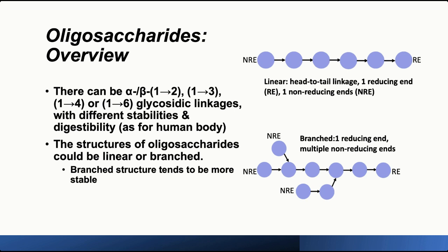Next we're going to cover the basic structure of oligosaccharides. As discussed, the fundamental units of oligosaccharides are monosaccharides, always connected via either alpha or beta glycosidic bonds. Based on the position of the carbon involved in the linkage, it could be 1-2, 1-3, 1-4, or 1-6 glycosidic linkage. All these types of linkages have very different stabilities and digestibilities in the human body.